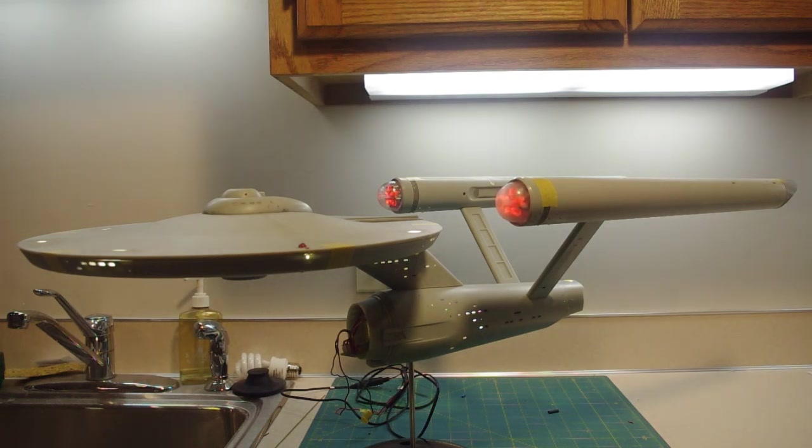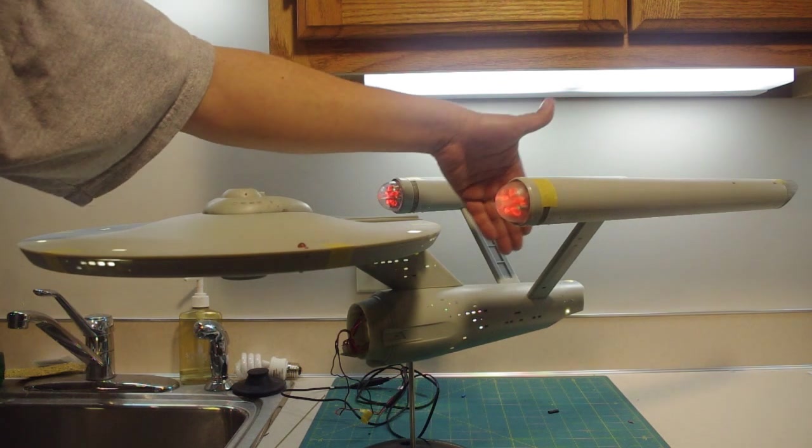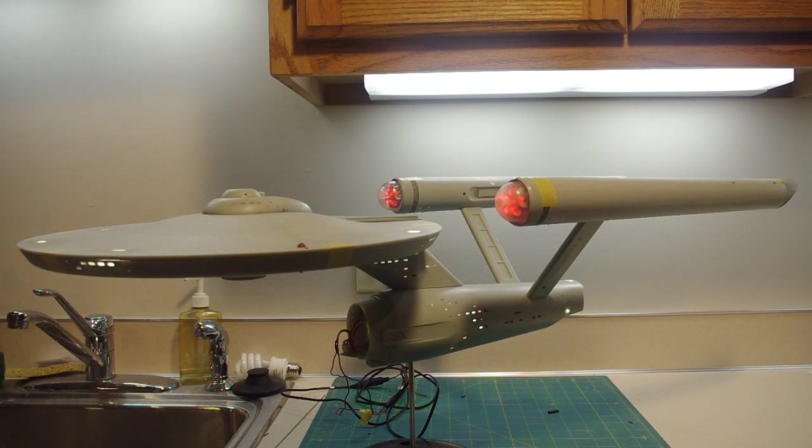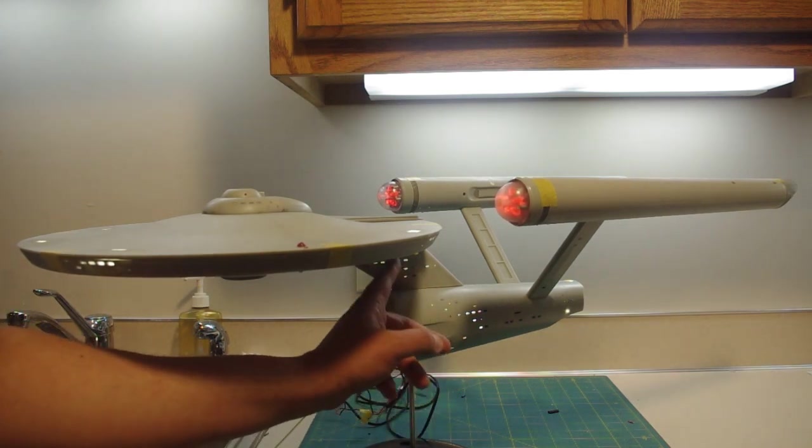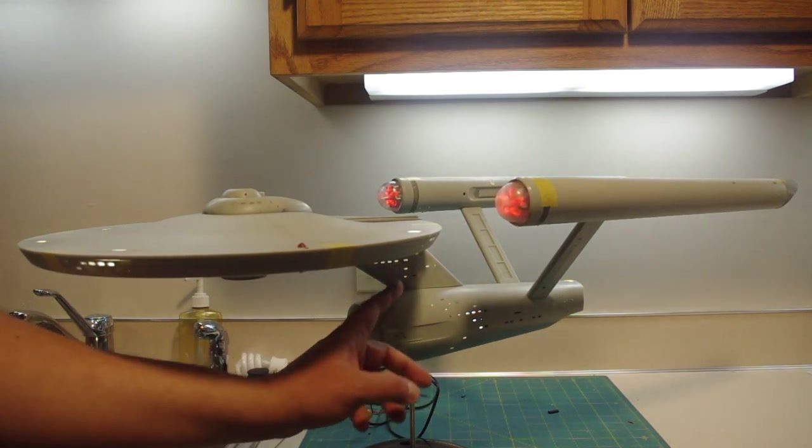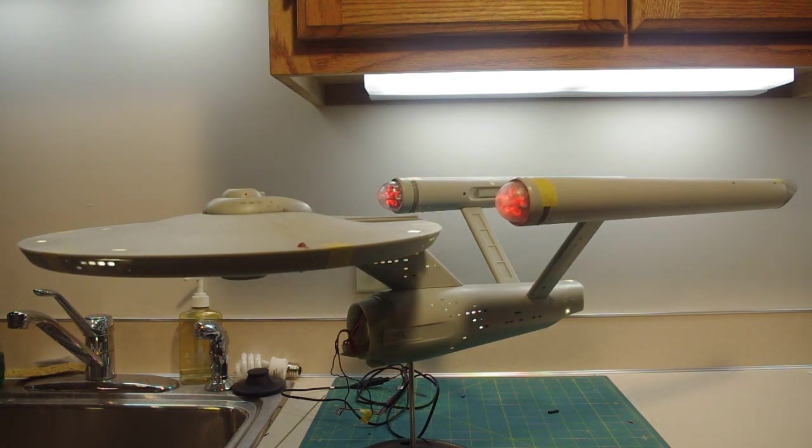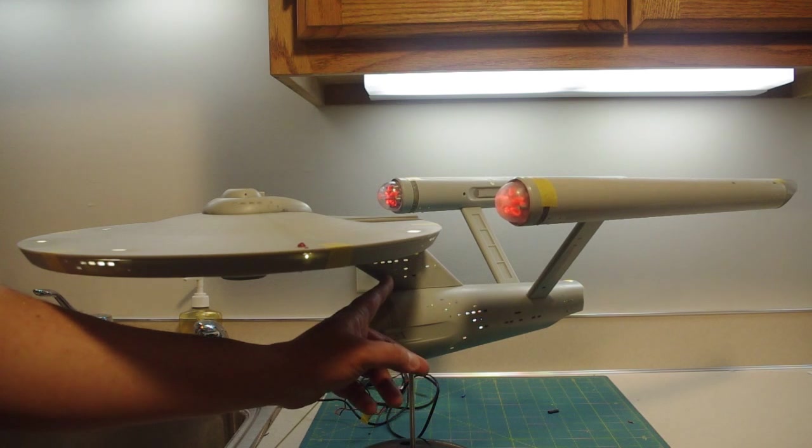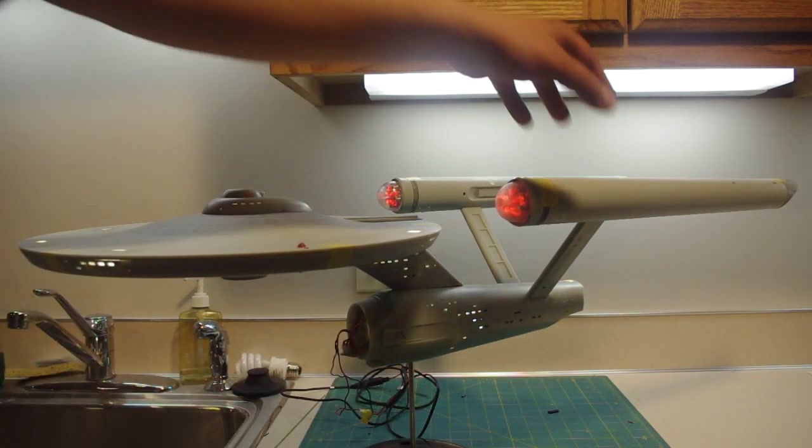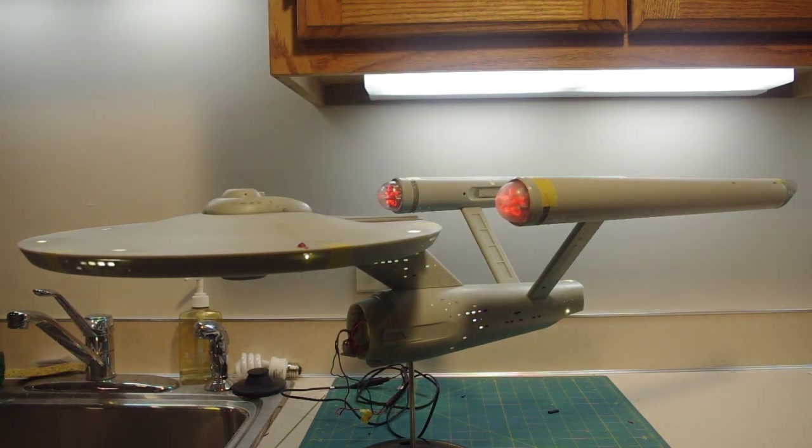So that is where I am right now with my 1:350 scale Enterprise. I gotta say, Polar Lights did design this kit very, very well. The issues I've encountered with building it are relatively minor. These pylons slot in really, really tight. I don't think I'm going to have any problems aligning these sub-assemblies. The pylon for the secondary hull to the saucer, very, very tight. I have not glued that piece in either. This is just friction fitted and the saucer is just friction fitted on top. Kudos to Round 2 Polar Lights for designing it like that. That means that I should be able to paint this model as sub-assemblies.